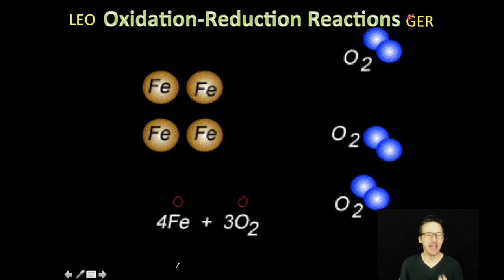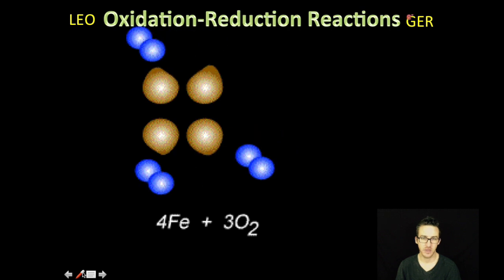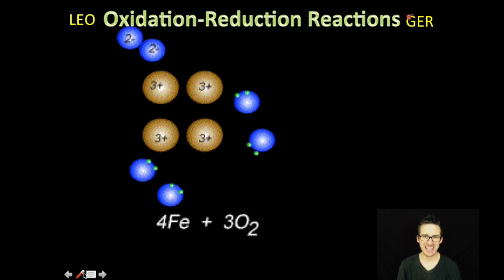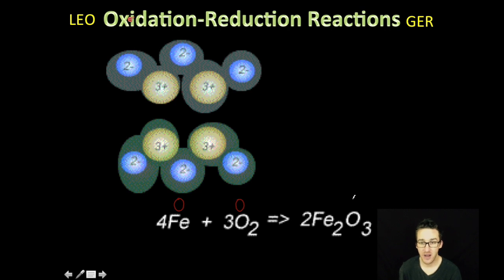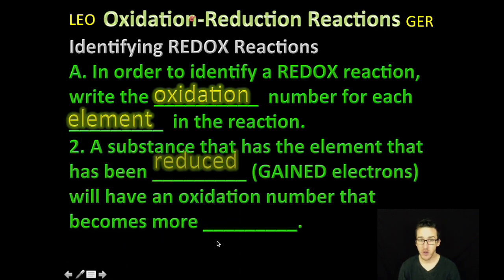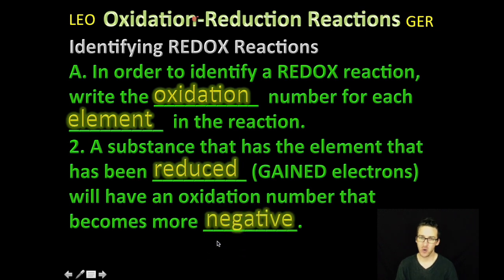But then the magic happens. Reaction. Chemical change. Oh, they lose electrons. They gain electrons. The oxidation numbers have changed. The oxidation number of oxygen is going to be minus two. And the oxidation number of iron is going to be plus three. So the thing that has been oxidized here is iron. It is the thing that lost electrons. Similarly, if you have a substance that has been reduced or gained electrons, it will have an oxidation number that becomes more negative.